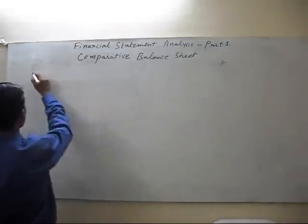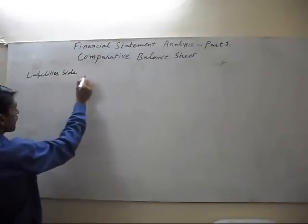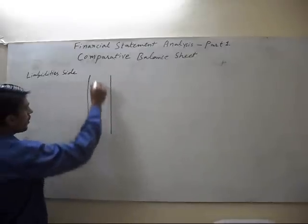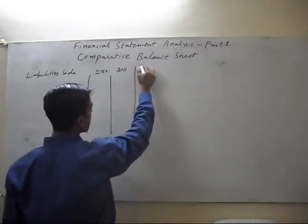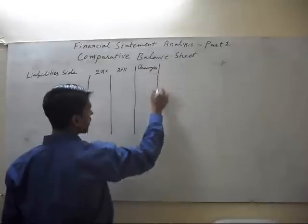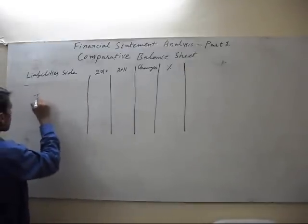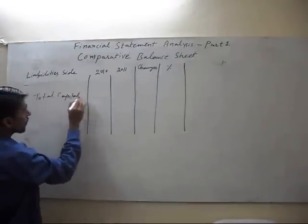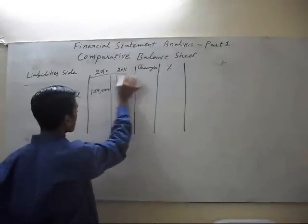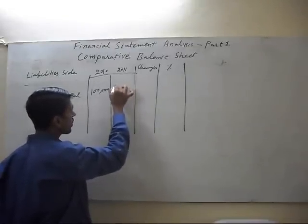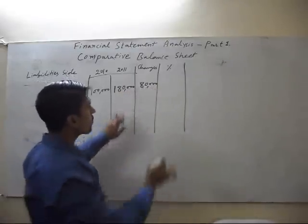First, liability side. This is 2010 and this is 2011, and changes and percentage. Suppose our total capital in 2010 is one lakh, but in 2011 our capital will increase by 80,000 more, like 1,80,000. Increase is 80,000. This is the 80% increase.